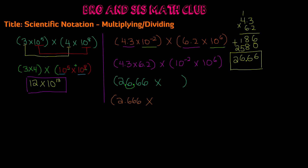We still have 10 to the negative 2 times 10 to the 6th — adding those gives positive 4, so we would have gotten 10 to the 4th. But since we moved the decimal one place to the left, we basically multiplied by 10 to the 1st power, because 2.666 times 10 to the 1st is 26.66. So we multiply by 10 to the 4th as well, and our exponents add: 4 plus 1 equals 5. Therefore our solution is 2.666 times 10 to the 5th power.